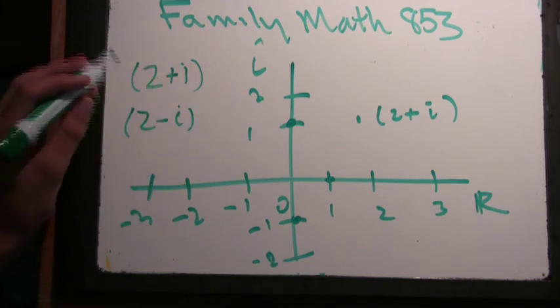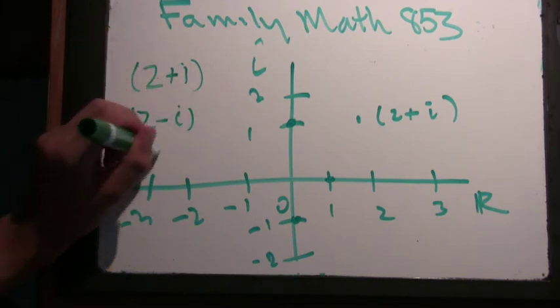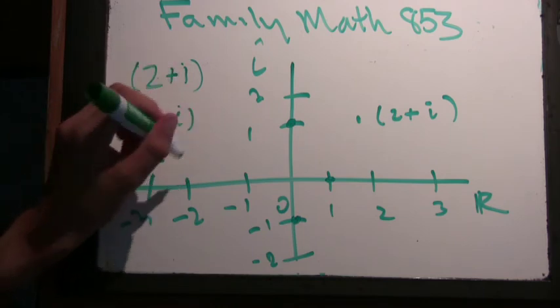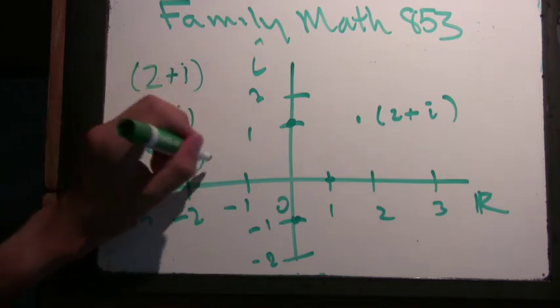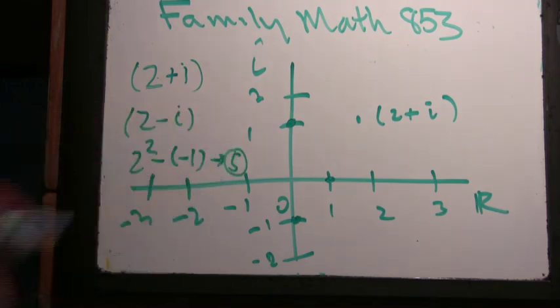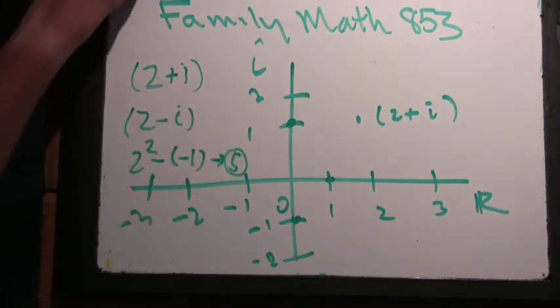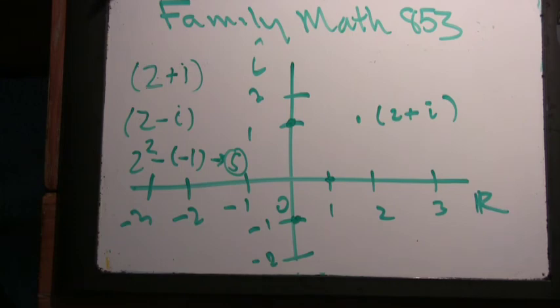Because by difference of squares, this is two squared minus i squared, which is minus one, which is five. Great. So we'll get some shifts in our primes. Probably some new primes. Got a great start today. All right, let's talk about some of these things.